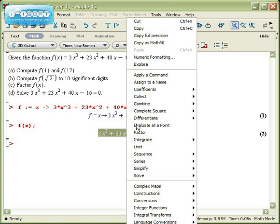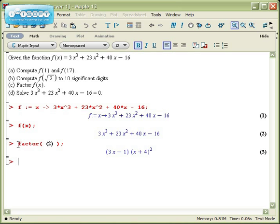Again, I'm going to right click on the output and see if I can find what I'm looking for in the list. In fact, there it is right dead center. To factor it, I would have typed in the command factor. And I find out that f(x) factors into 3x minus 1 and x plus 4 squared.